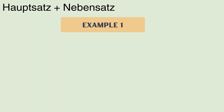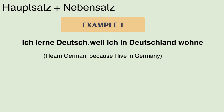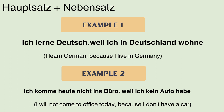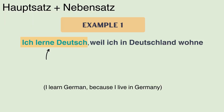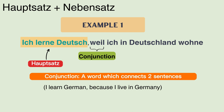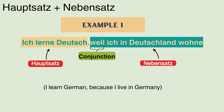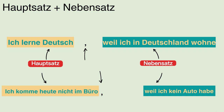Now let us combine both to make a sentence: 'Ich lerne Deutsch, weil ich in Deutschland wohne' — 'I learn German because I live in Germany.' Another example: 'Ich komme heute nicht ins Büro, weil ich kein Auto habe.' We see how the Hauptsatz and Nebensatz come together to form a complete sentence, and how the Nebensatz adds to the meaning of the Hauptsatz. The first part 'Ich lerne Deutsch' is the Hauptsatz; 'weil' is the conjunction connecting two sentences; and 'weil ich in Deutschland wohne' is the Nebensatz. The Hauptsatz and Nebensatz are always separated by a comma.